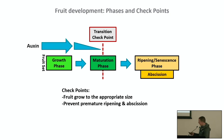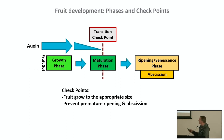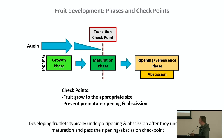One of the key hormones in this process is — perhaps surprisingly — auxin. Auxin is critical for growth, and it's the decrease in auxin that stimulates the maturation phase and is absolutely critical for this transition. In summary, developing fruitlets typically undergo ripening and abscission only after they pass this checkpoint.